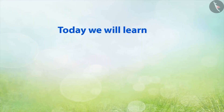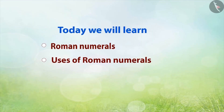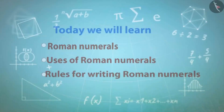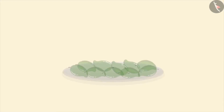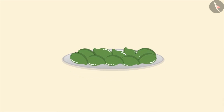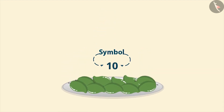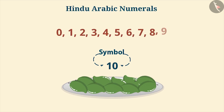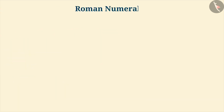Today we will learn what are Roman numerals, their uses and the rules for writing them. In order to count, we need numbers, and to express the numbers, we need symbols. We use the Hindu-Arabic numeral system to express numbers using digits from 0 to 9. There are similar methods to express numbers. In this video, let us talk about an ancient system which is called Roman numerals.